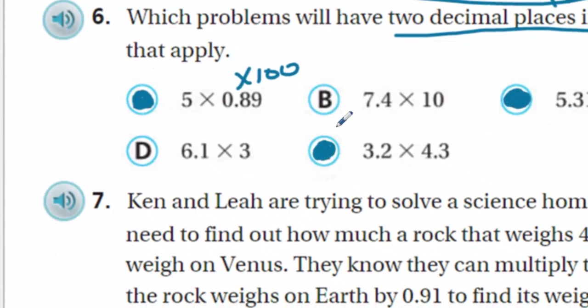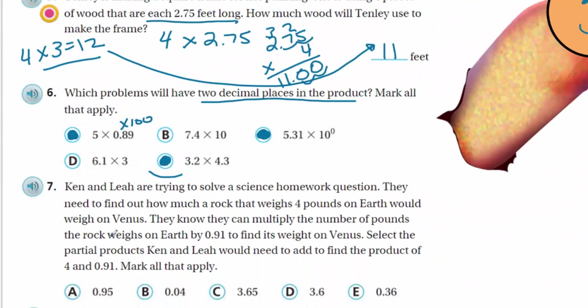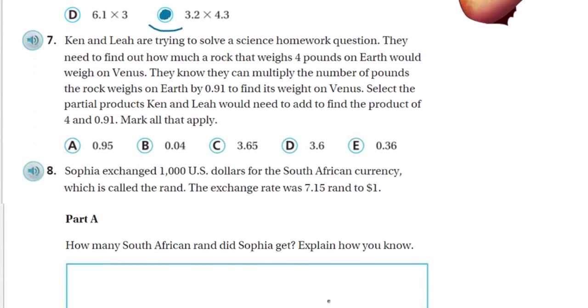6.1 times 3. No. I see 1 decimal place. Here, I have 1 decimal place. 10ths and another 10ths. We know that 10ths times 10ths is going to give us hundreds. That's going to be 2 decimal places. So, I say yes to letter E. And look at that. It's like two eyes and a nose and then a mouth. Hey. A face.